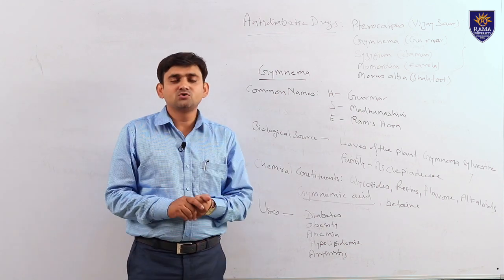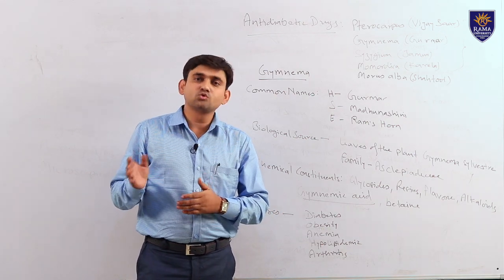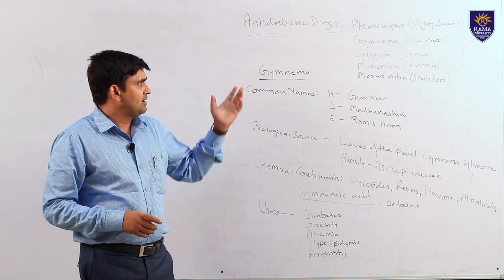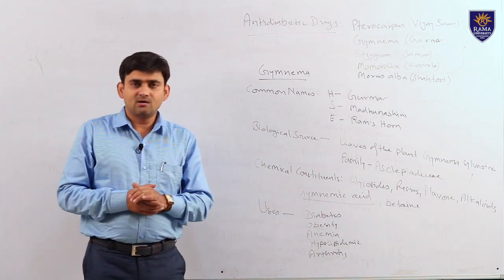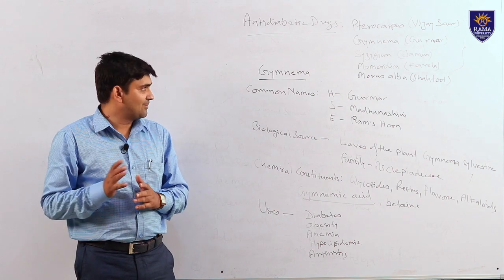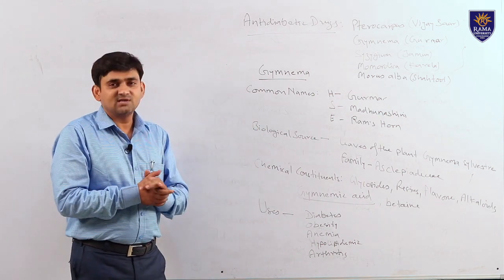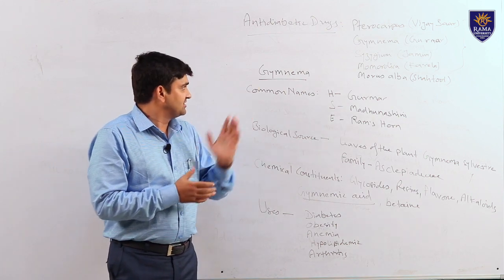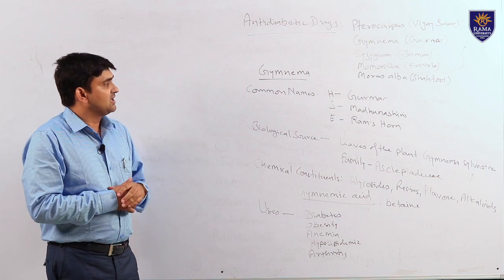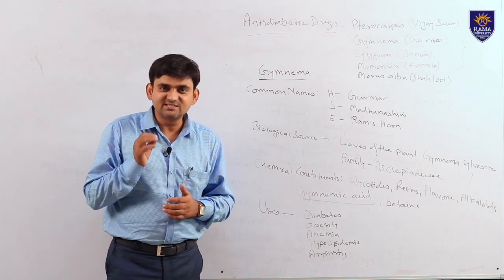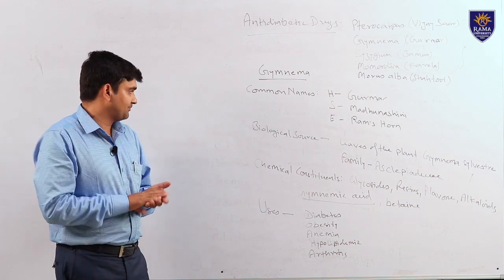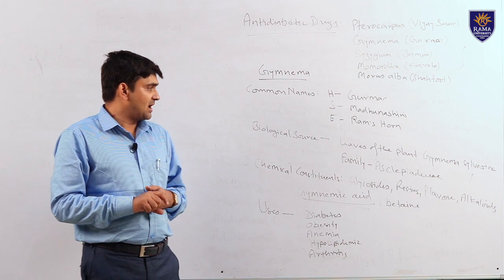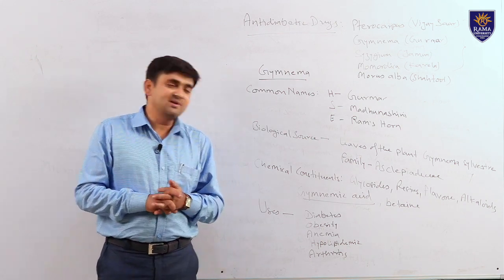Antidiabetic drugs are those which are used to reduce elevated blood glucose levels in diabetic patients. Some commonly used antidiabetic drugs are Pterocarpus (Vijayasar), Gymnema (Gurmar), Syzygium (Jamun), Momordica (Karela), and Morus alba (Shahtut). We will discuss the first drug, Gymnema. Common name in Hindi is Gurmar, in Sanskrit it is Madhunashini, and in English it is Ramshorn. Biological source: the drug is obtained from dried as well as fresh leaves of the plant Gymnema sylvestre, belonging to family Asclepiadaceae.